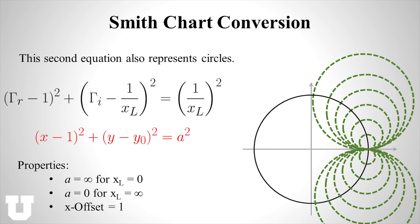Next, looking at the second equation we derived, you again get a family of circles — positive circles going up and negative circles going down, corresponding to positive or negative values of my reactance. Given some fixed reactance, all the possible values of gamma that would satisfy that particular reactance all lie on a circle. Different reactances correspond to different circles. As the reactance approaches infinity — which is again an open circuit — they again converge on that point on the far right edge of the Smith chart. As my reactance goes to zero, the radius of that circle approaches infinity, which corresponds essentially to just the x-axis. They're all shifted over by a value of one.